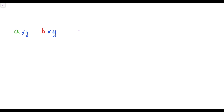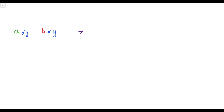Let the third element be Z. To satisfy condition 3, we have to multiply Z with either B or Y. If we multiply Z by Y, the GCD of those two elements is Y, which is greater than 1, but the GCD of all three elements is also Y — which is greater than 1. So it violates condition 4. Therefore, we cannot multiply Z by Y; the only option left is to multiply Z by B.